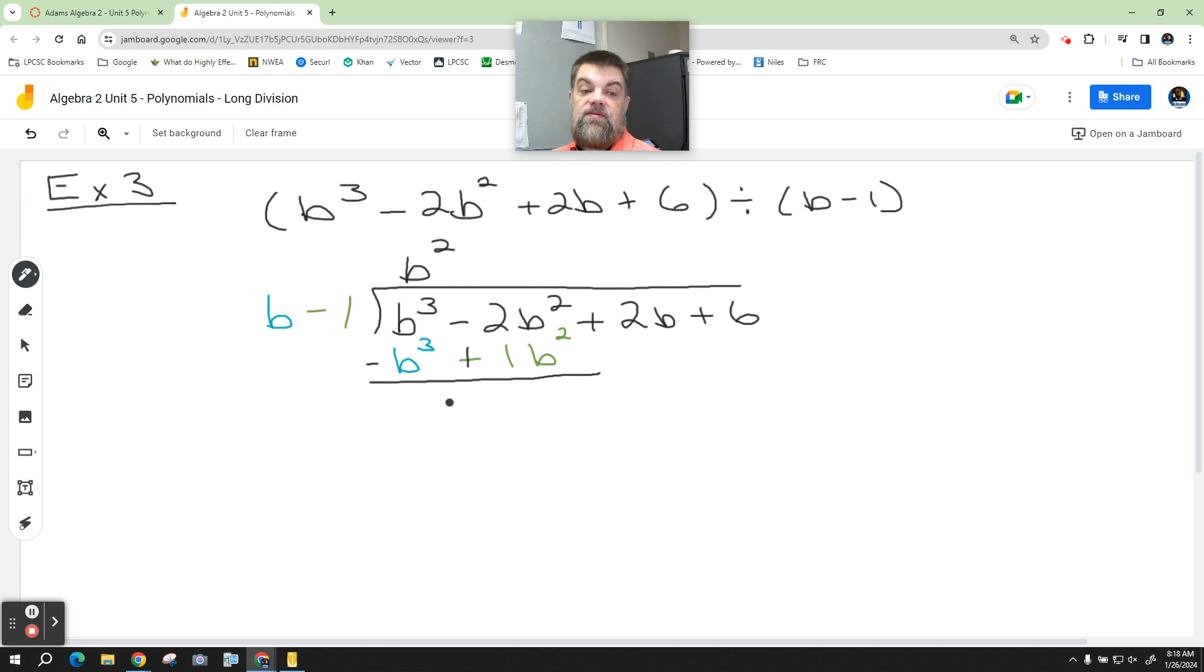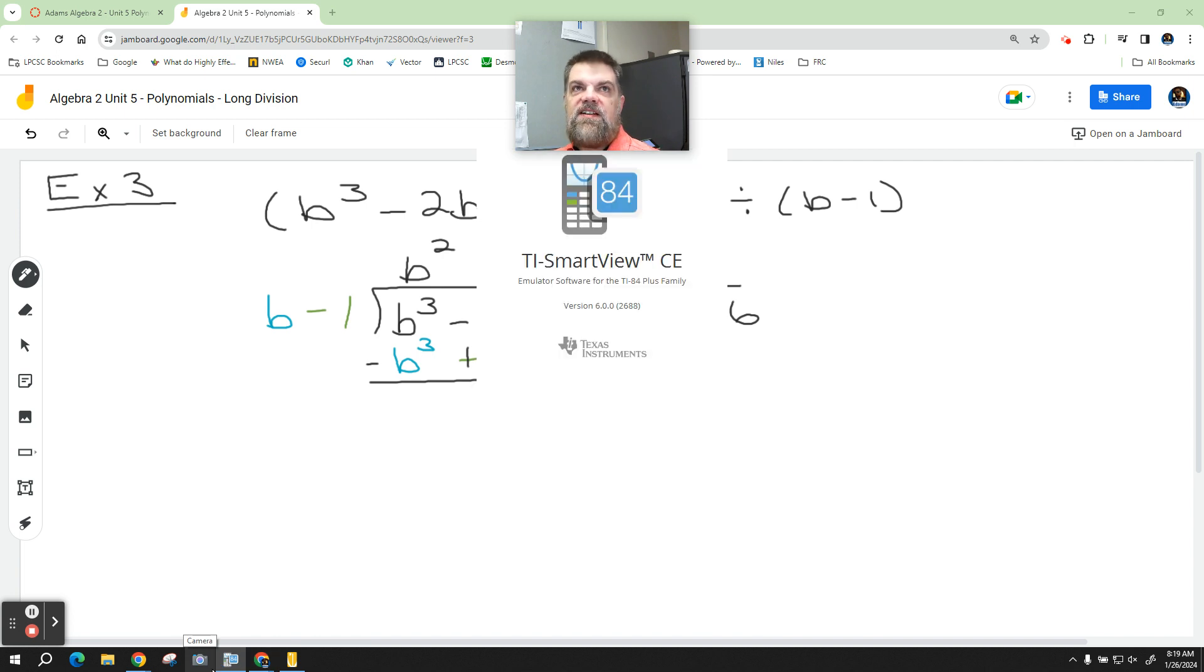What is b cubed, I think I'm saying the wrong thing, but I'm writing down the right thing. What is b cubed minus b cubed? Zero, right? Now what is negative 2b plus 1b? Squared. I keep forgetting the powers. So what is negative 2b squared plus 1b squared?